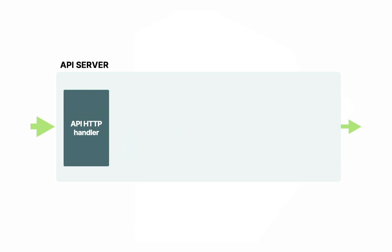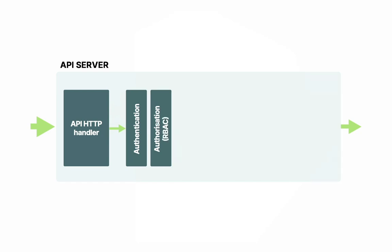Kubernetes has two types of users: normal users like you and I, or service accounts managed by Kubernetes. Authentication checks if the user or service account should be allowed to access the cluster. Next comes authorization.